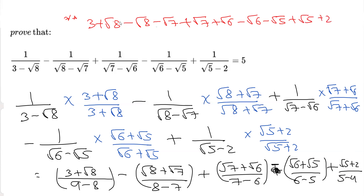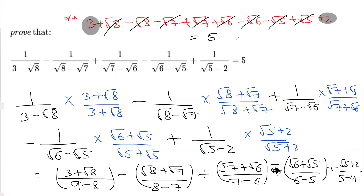Now you can see that root 8 and minus root 8 cancel. Root 7 and minus root 7 cancel. Root 6 and minus root 6 cancel. Negative root 5 and positive root 5 cancel. So we are just left with 3 plus 2, which equals 5. That is exactly the RHS — we had to prove this equals 5, and we got 5.